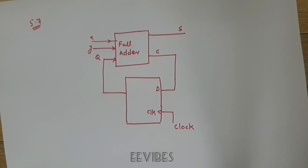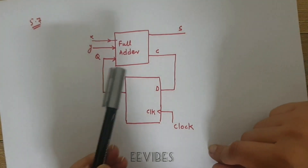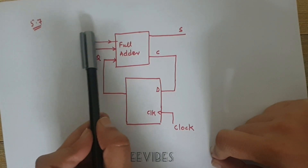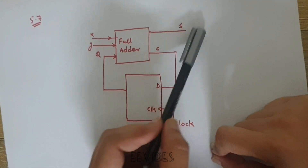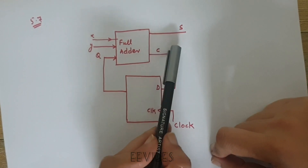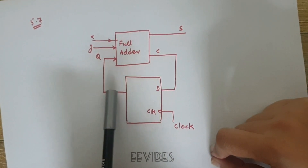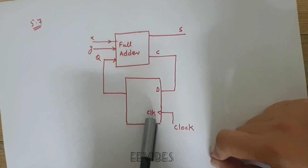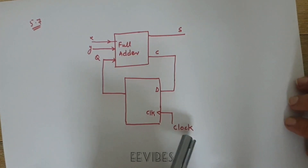I am going to solve problem 5.7 of Mano's textbook. You are given a sequential circuit composed of a full adder and a D flip-flop. There are two inputs, x and y, and one output, S. The carry bit of the full adder acts as the driving input of the D flip-flop, and the flip-flop output acts as the carry-in for the full adder. A clock signal is present as well.